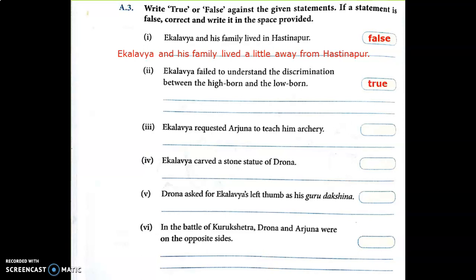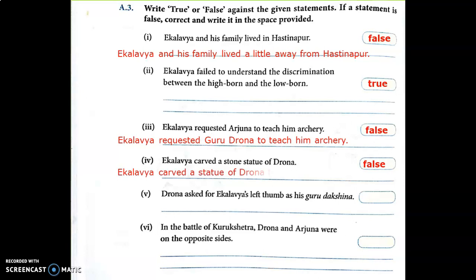Statement three: Eklavya requested Arjuna to teach him archery. Is it true? No, it's false. Correction: Eklavya requested Guru Drona to teach him archery. Statement four: Eklavya carved a stone statue of Drona. Was it a stone statue? No, false. Correction: Eklavya carved a statue of Drona from a tree trunk.